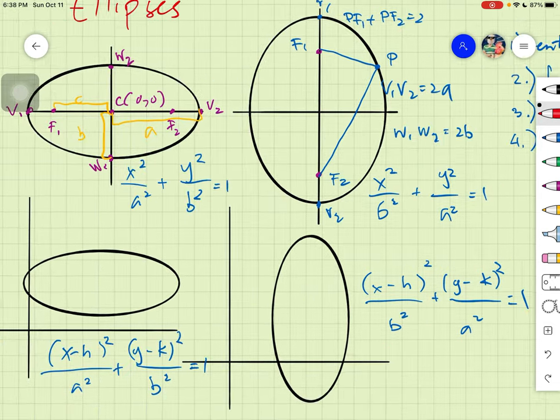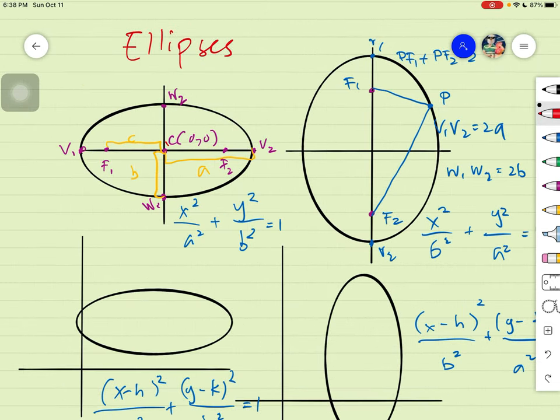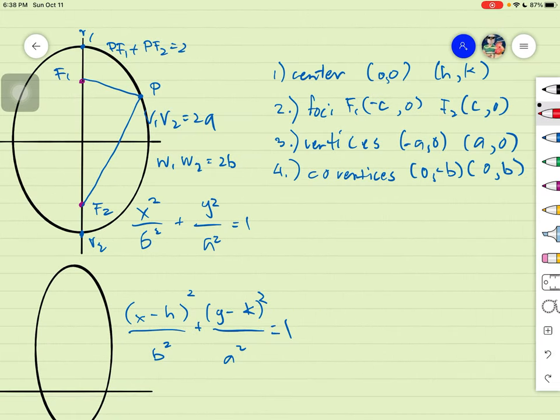Next one, for our foci, since our foci point of reference is the center, it's c units to the right and c units to the left. Therefore, our foci will have the value of c, but the value of c will be placed on x again. Because the foci and vertices, they lie on the x-axis. So eto yung ating foci.